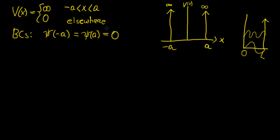Immediately we notice the boundary conditions: because the potential extends to infinity at both boundaries, the wave function must be zero there. So the wave function is zero at the left wall, may have some shape in between, and becomes zero again at the right wall. There is no probability the particle will exist outside this confined region.